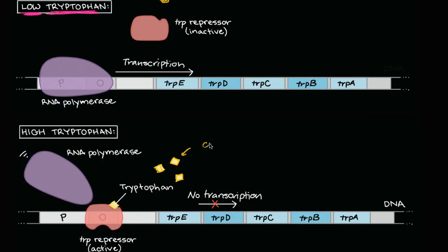But when you have a lot of tryptophan, the tryptophan can act as a co-repressor. It can bind to the trp repressor, essentially activate it, so that it'll change its conformation so that it can then attach to the operator in the operon. And once it's attached to the operator, well then the RNA polymerase can no longer move forward with transcription.